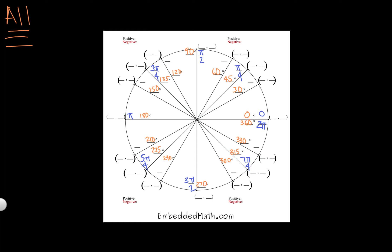We can go back and do our 30, 60, 90 degrees. Again, those are the 6 sections. So this would be π over 6. 2π over 6, which simplifies to π over 3. 3π over 6, which gives us our π over 2. 4π over 6, which is 2π over 3. 5π over 6. And 6π over 6. 7π over 6. We've got 8π over 6, which is 4π over 3. 9π over 6 gives me 3π over 2. 10π over 6, which is 5π over 3. And finally 11π over 6.